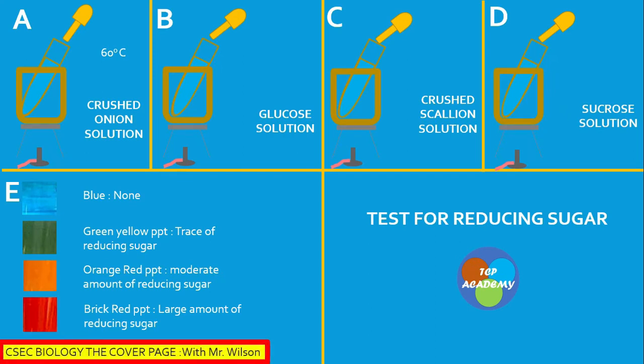The substances being tested are grouped A to D. A is crushed onion solution, B is glucose solution, C is crushed scallion solution, and D is sucrose solution. The first three can be classified as monosaccharides or disaccharides, while sucrose solution in D is classified as a disaccharide.